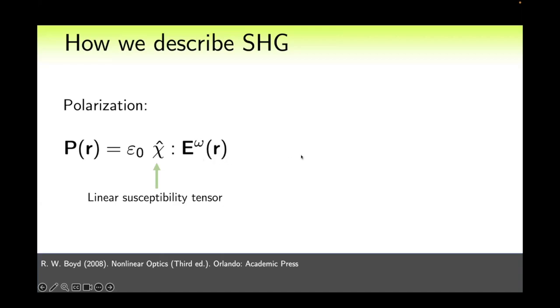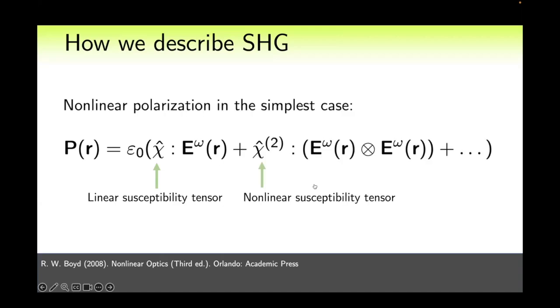What happens when we move to the nonlinear case? In simplest case the nonlinear polarization is described as follows. Here we can see an additional term and the electric field contributes twice and is related to the polarization with help of nonlinear susceptibility tensor. This tensor is a third-rank tensor but this we will discuss later.